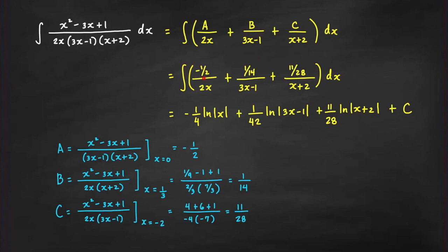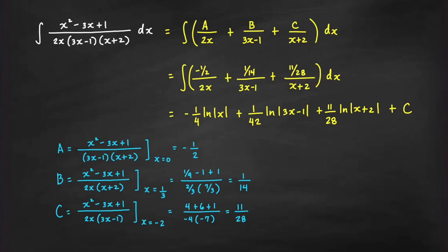Now with a, b, and c found, we can easily evaluate the integral. The result is negative 1 fourth ln|x|. For the second term, we use substitution with u equals 3x minus 1 and du equals 3 dx, so its integral becomes 1 over 42 ln|3x minus 1|. The final answer is negative 1 fourth ln|x| plus 1 over 42 ln|3x minus 1| plus 11 over 28 ln|x + 2| plus C.